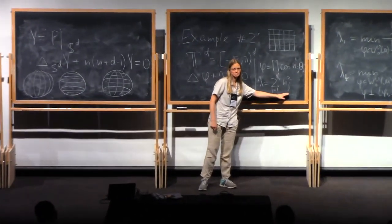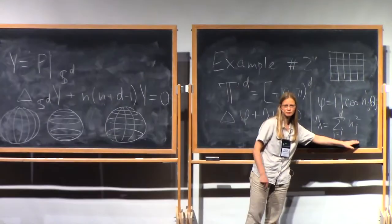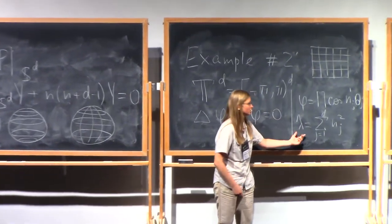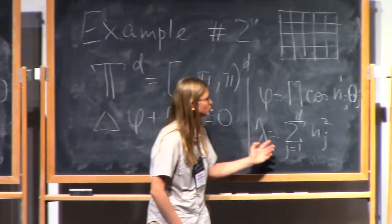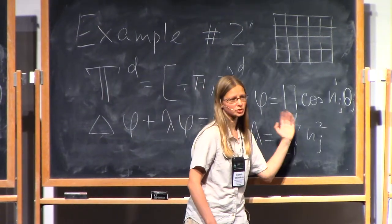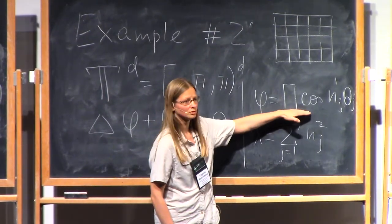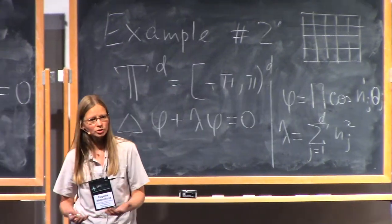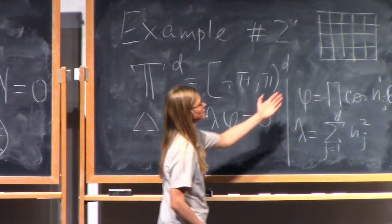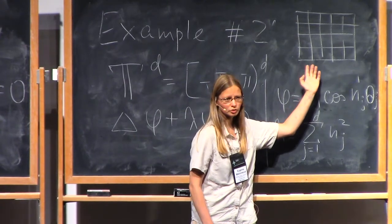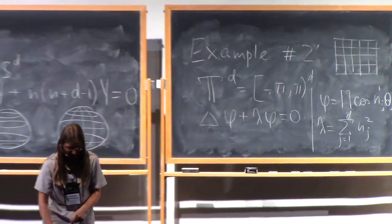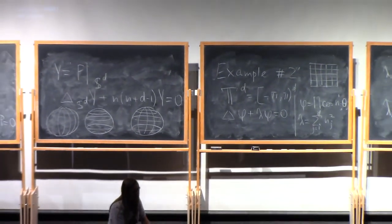We know that there are many numbers that you can write as sum of the squares in many different ways. If you pick such eigenvalue, you will have lots of eigenfunctions. Instead of taking these nice products, you can try to take a linear combination of those and look at the corresponding picture of the zero set or nodal domains. I'll show you some of the examples, hopefully.